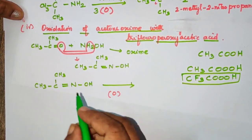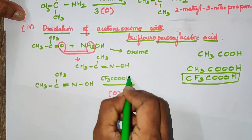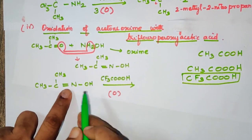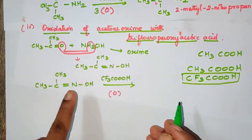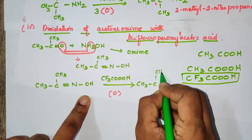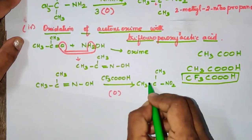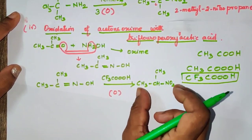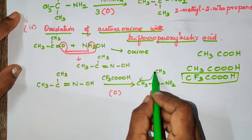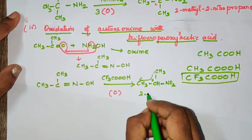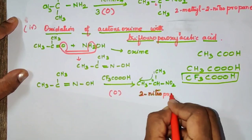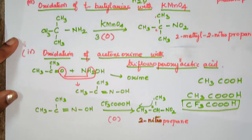The product formed is 2-nitropropane. We add the NO2 group to give CH3-CH(NO2)-CH3. This is a secondary nitroalkane. Looking at the longest chain — it is 3 carbons, with nitro on carbon 2 — so the name is 2-nitropropane. This is the product formed in this third question.